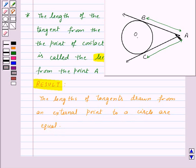That means according to this result, AB will be equal to AC. So if we are given that the length of AB is 5 cm, then using this result we can say that AC will also be equal to 5 cm.